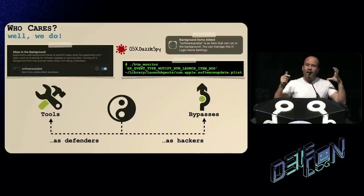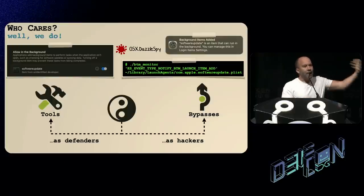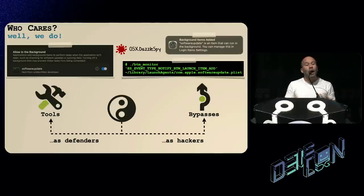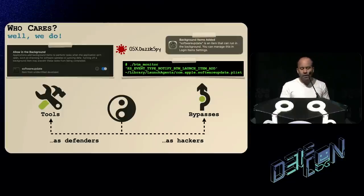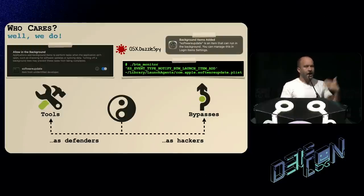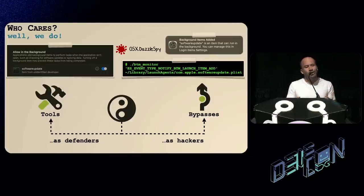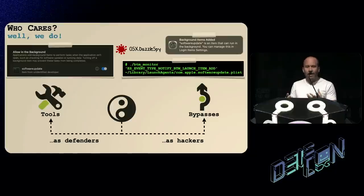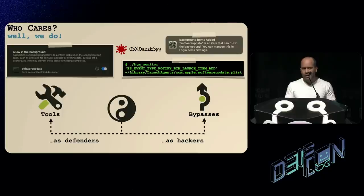As defenders, we now have a nicely organized subsystem that manages most persistent items. If we can understand and tap into that, we can build very powerful security tools that can generically detect persistent malware. As hackers, BTM poses problems. There's going to be an alert telling the user something just persisted, so if you persist your backdoor the user will be alerted. There's also a security message broadcast, so any security tools installed on the system will get a notification. These are brand new events on the latest version of macOS, so as hackers we need to figure out exactly how to get around this.